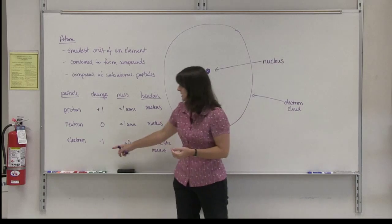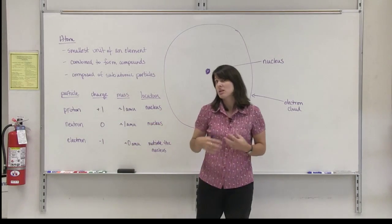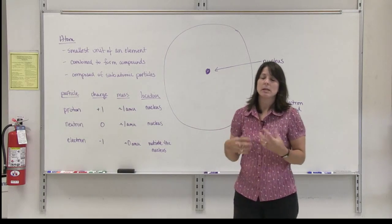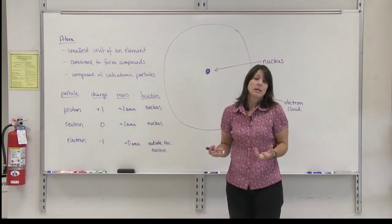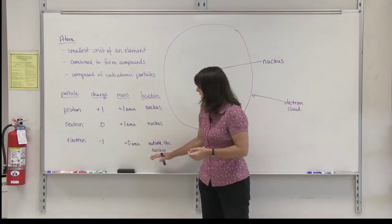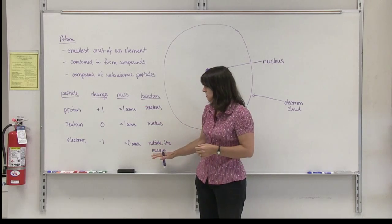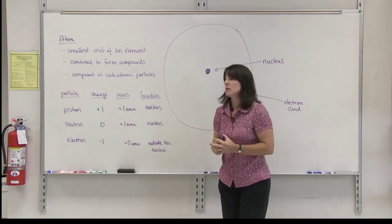Electrons are negatively charged. They have a negative one charge. Their mass is so small that it's basically negligible. So we can assume it's zero for our purposes in this course. Its location is not in the nucleus along with the protons and the neutrons. It is actually outside the nucleus.